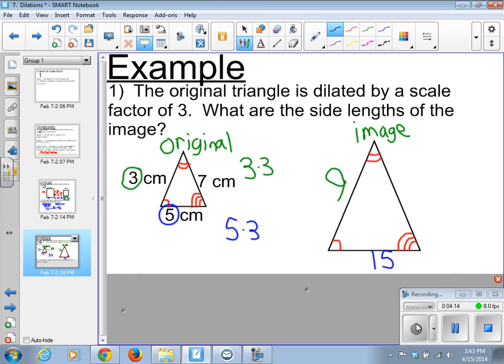Then we take the right side length, multiply that by the scale factor. Multiply that by 3 gives us 21. Those are the side lengths of the image.